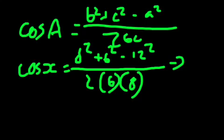Which comes out to, I'll just do it in the calculator, 8 squared plus 6 squared minus 12 squared, all over 2, 6, 8. Which comes out to negative 11 over 24.